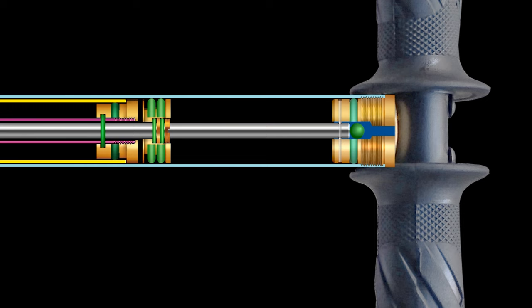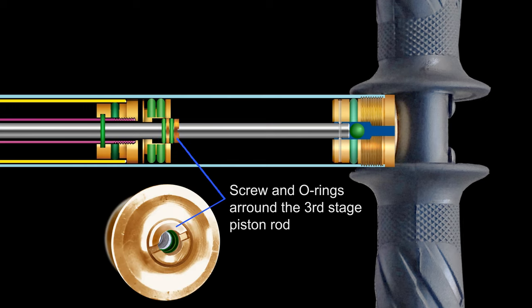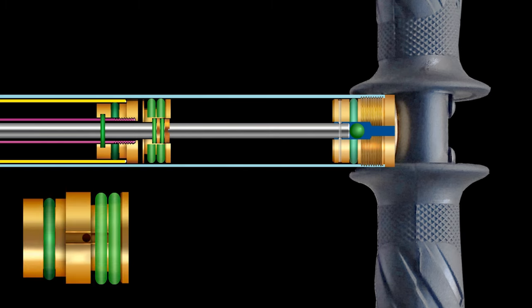There are two O-rings around the piston rod. These O-rings are tightened with the help of a screw. There are two cuts below the O-rings of this piston.